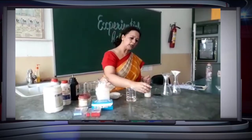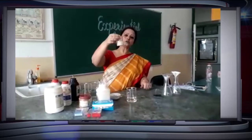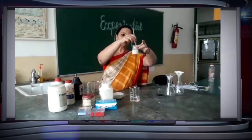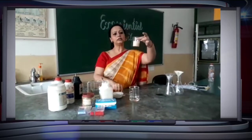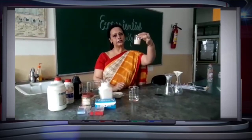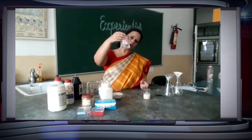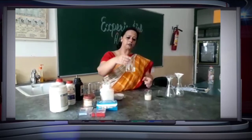Now if we take our next solution, that is the suspension made with calcium carbonate and water, you can see this is not transparent — rather it is opaque. We are unable to see through it from one side to another. So the property of suspension is that it is opaque, and the property of true solution is that it is transparent.